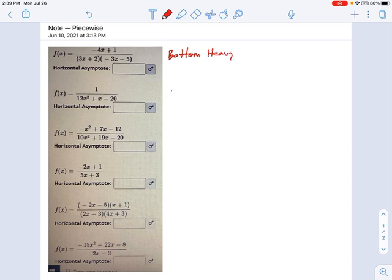The next one, bottom-heavy, same reason, right? You've got an x squared on bottom and only a value of 1 on top.